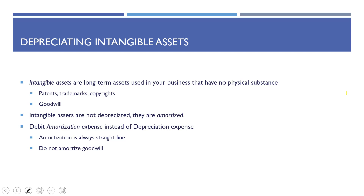A couple of other things to be aware of: intangible assets are long-term assets used in your business that have no physical substance — things like patents, trademarks, and copyrights. Goodwill is also considered an intangible asset. Intangible assets are not depreciated; instead, the term used is amortization. So instead of recording depreciation expense, you debit amortization expense. Amortization is almost always straight line. One exception: under U.S. GAAP, goodwill is not amortized.